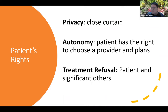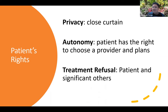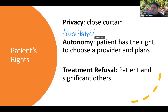Autonomy is the right to choose a provider and the plan. For example, if a patient says their doctor is Dr. Istoesta and the nurse offers Dr. Villanueva, the patient has the right to insist on Dr. Istoesta. However, not all doctors can enter all hospitals — in the practice of medicine they have what is referred to as credentialing and privileging.